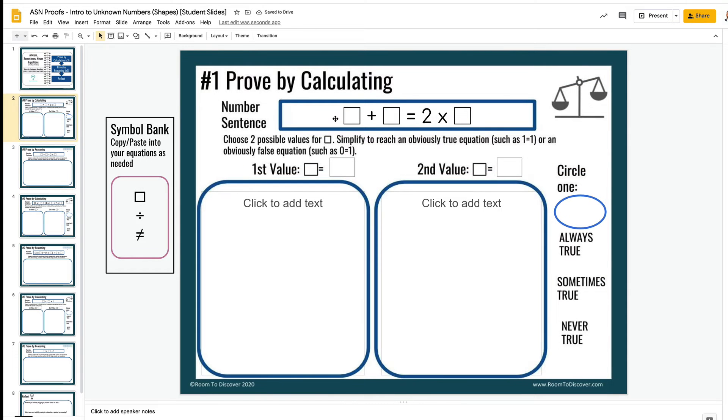So to prove by calculation with a variable, first they figure out what value are we going to calculate for. So let's say we choose three. Then we evaluate for that value and try to get to a point where we show that something's clearly true or clearly false, like 6 equals 6 shows it's clearly true. I also give students some symbols over here, so we have a bank of symbols, so in case they wanted to use the not equal to or the division sign or the box variable, I put them there so they can copy and paste into the equation.